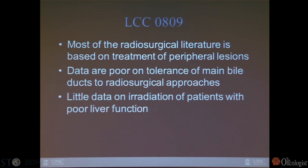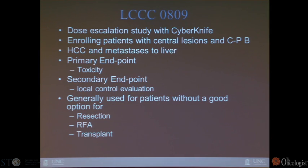We have a protocol currently open to evaluate treatment of these tumors. Much of the literature is based on treatment of peripheral lesions where one can get very good control, and there's not much data on the tolerance of central bile ducts to high-dose radiation — something one might be concerned about. We are also entering patients with poor liver function, which has also not been generally studied in the radiosurgical literature. It's a dose-escalation study treating patients with both hepatocellular carcinoma and oligometastatic disease, looking at toxicity and local control. We're generally treating patients who are not good candidates for resection, RFA, or in the case of HCC, transplant.